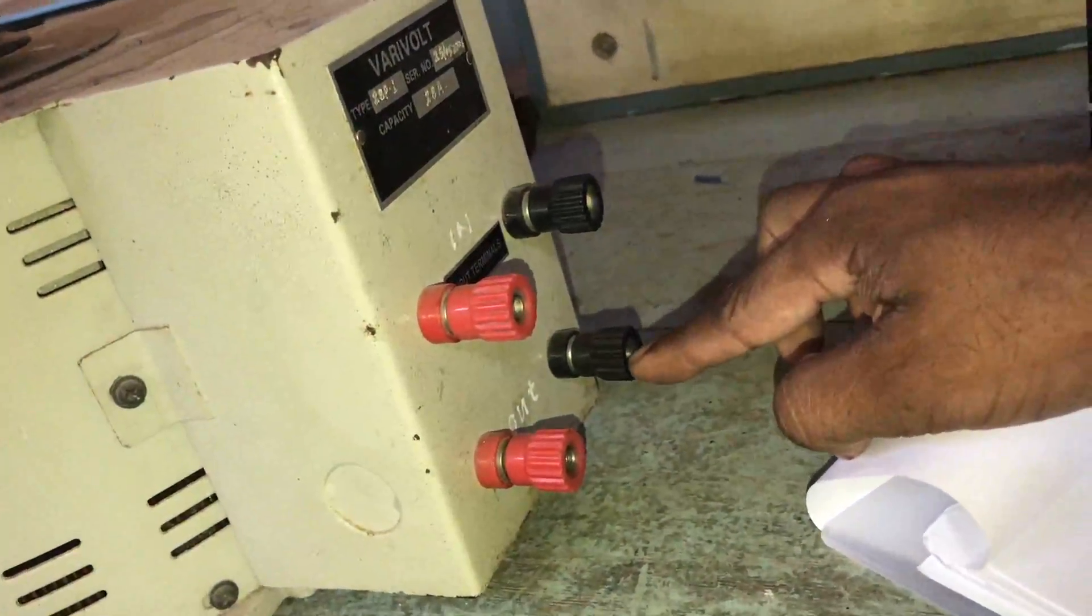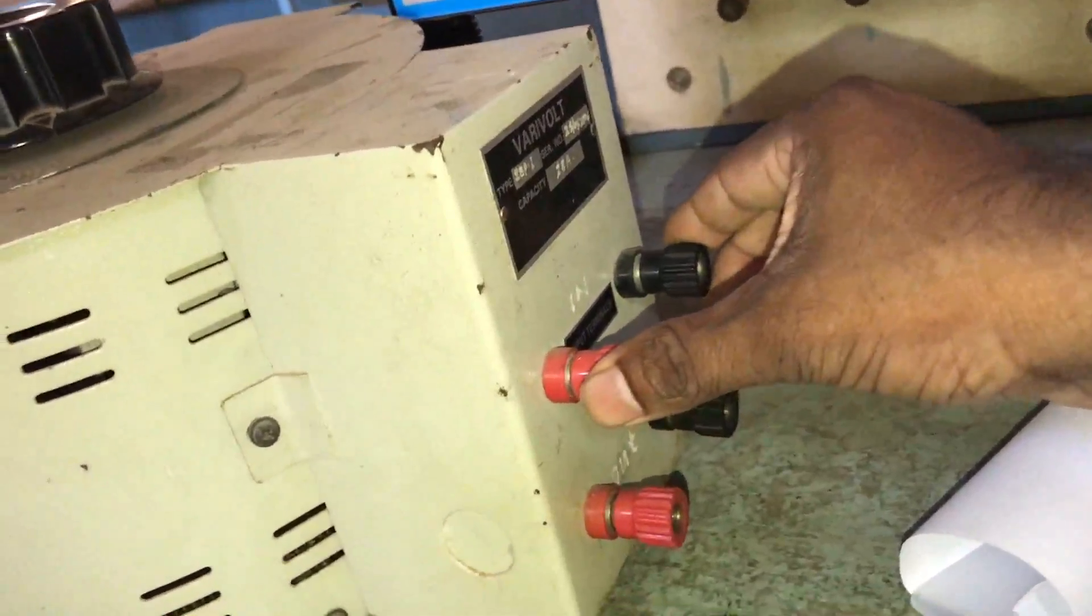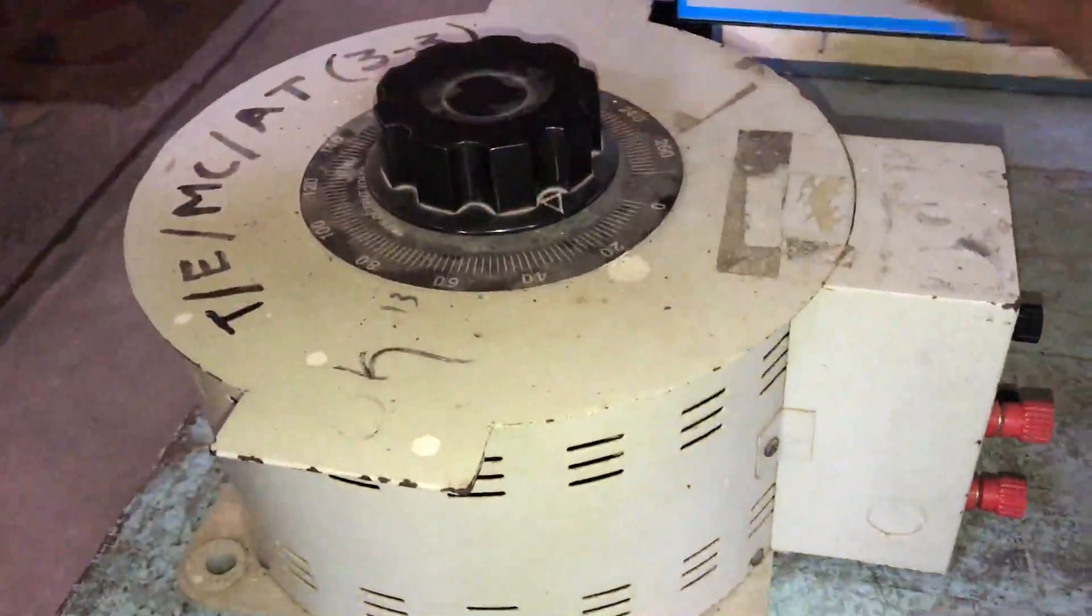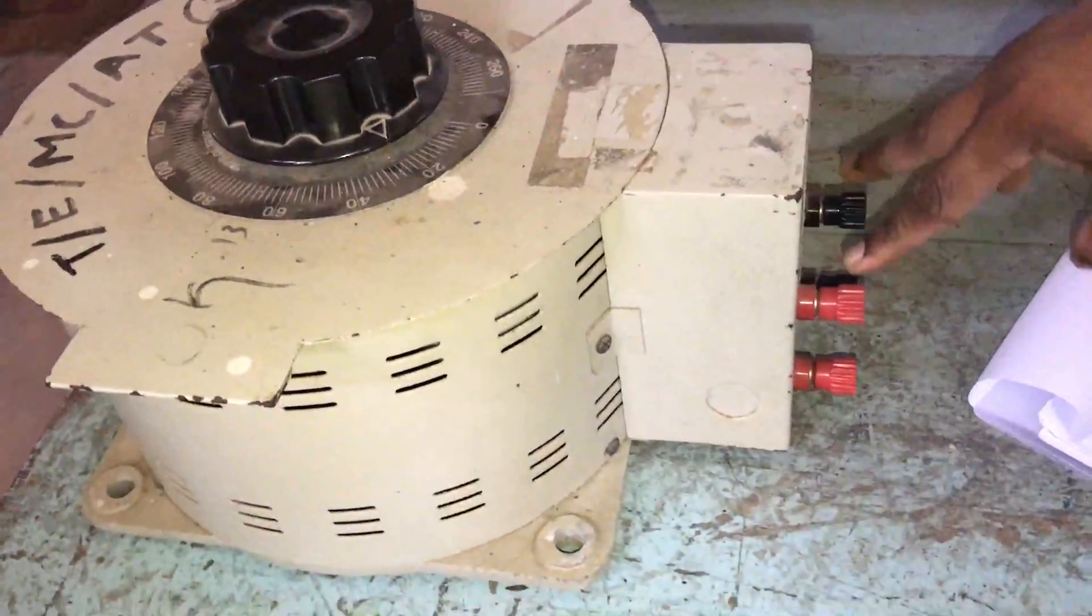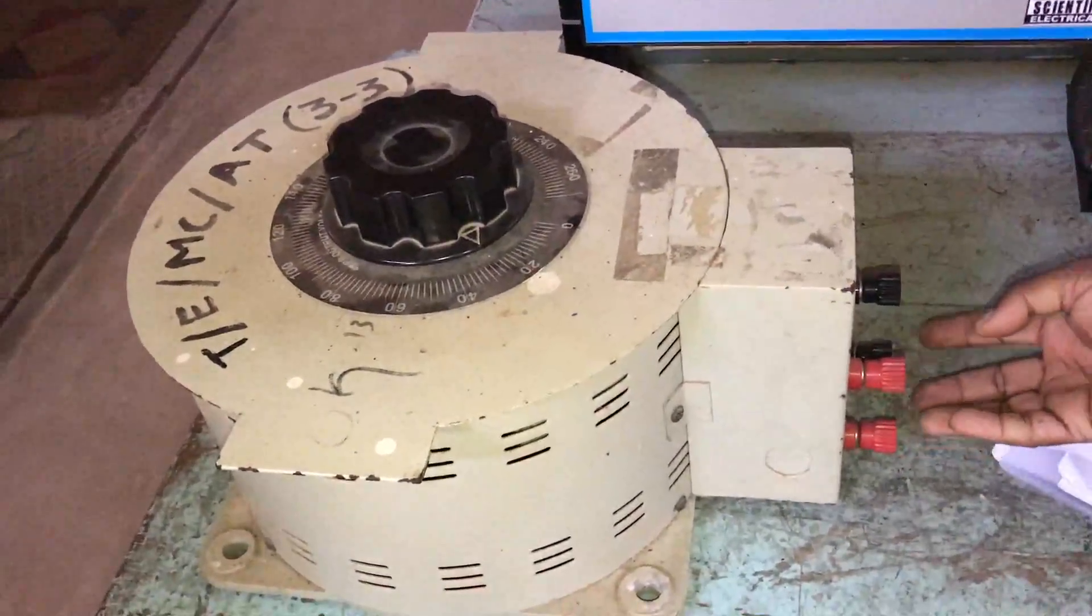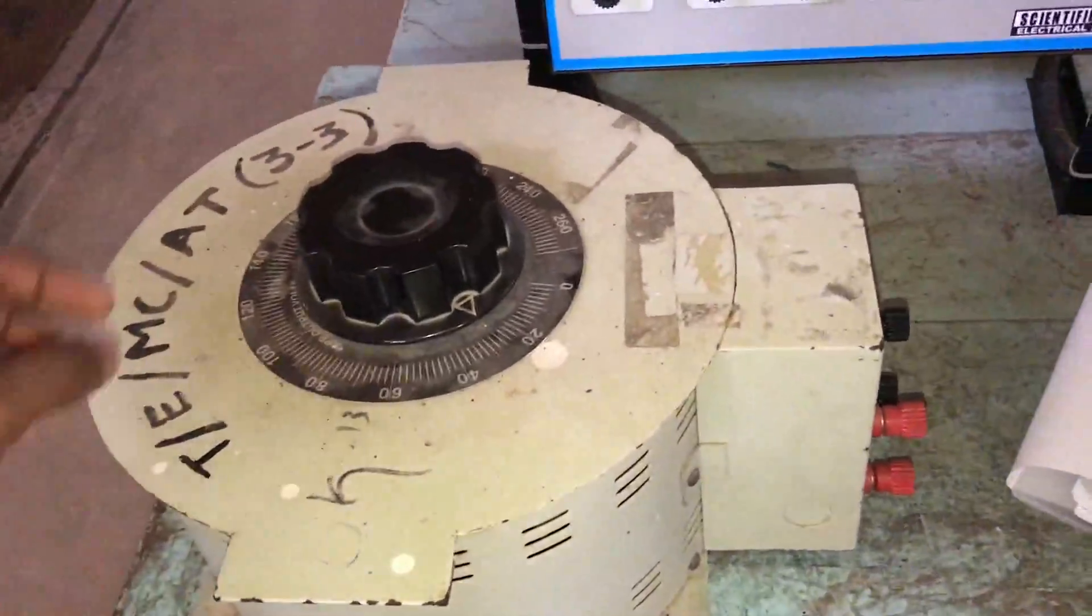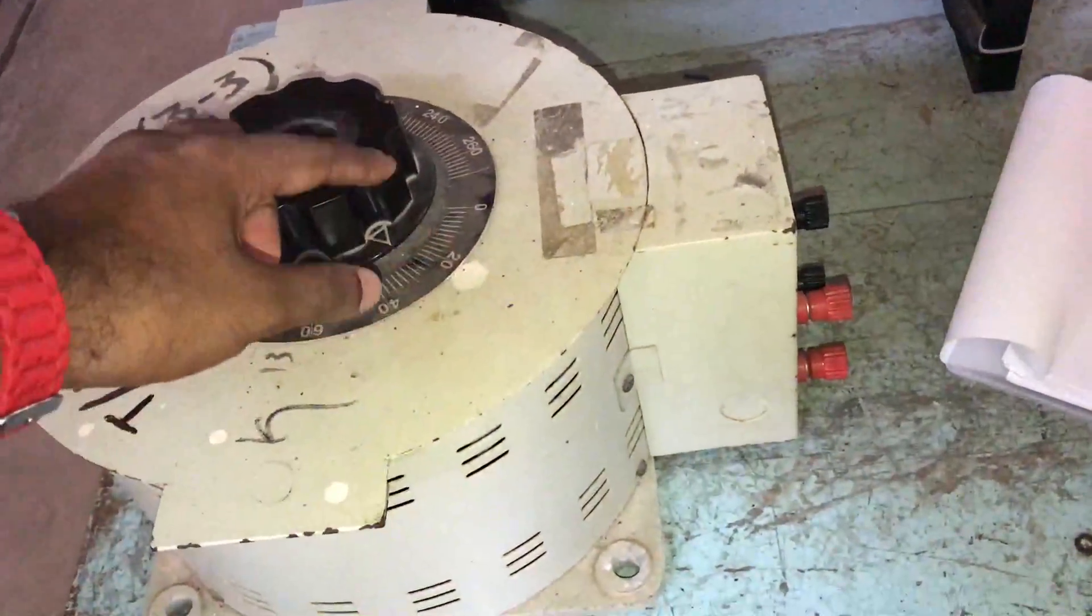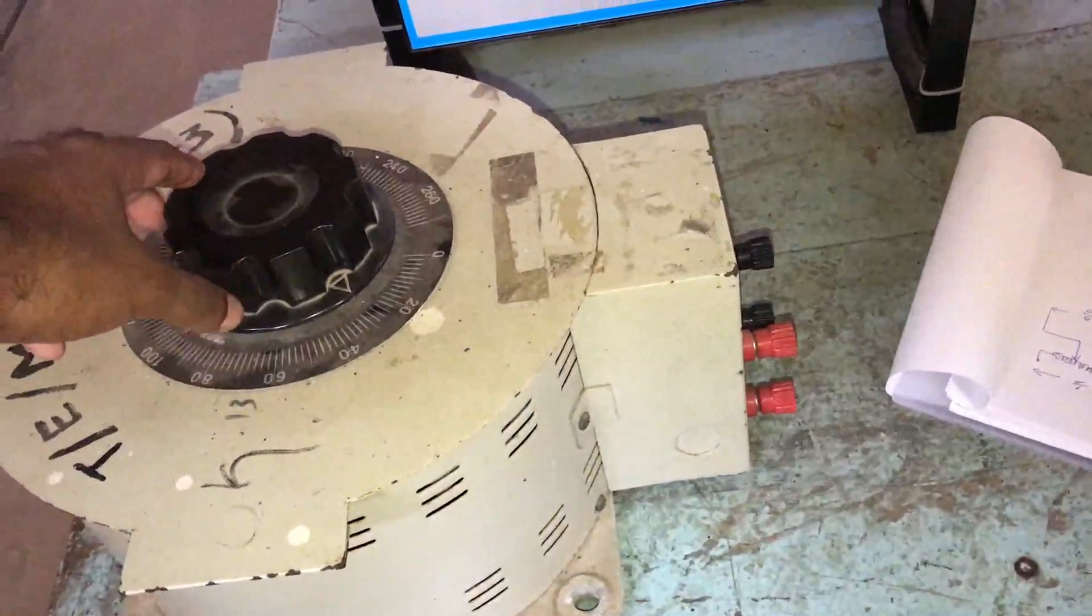It is the input point and output point. Whenever I change the voltage, input is 240 volts and output adjusts here to get the corresponding voltage. By varying this, the voltage can obtain different voltage at the output. The maximum voltage we can obtain from this is 260 volts.